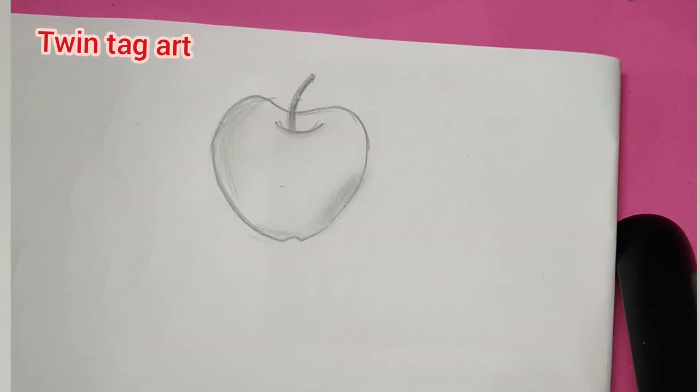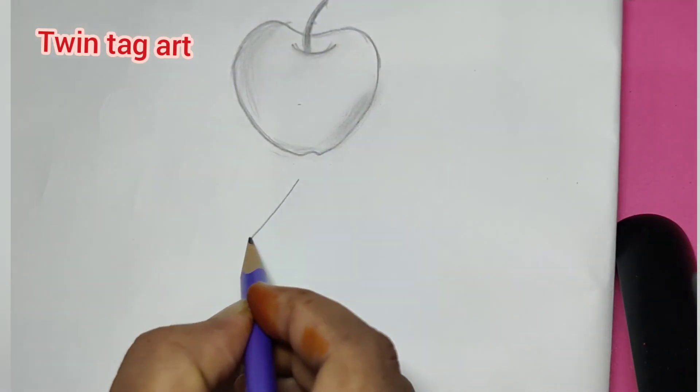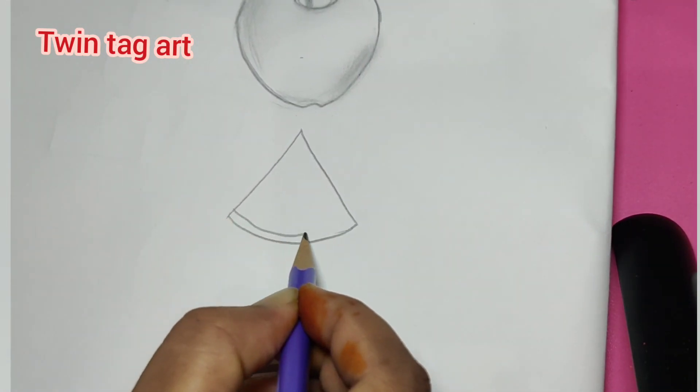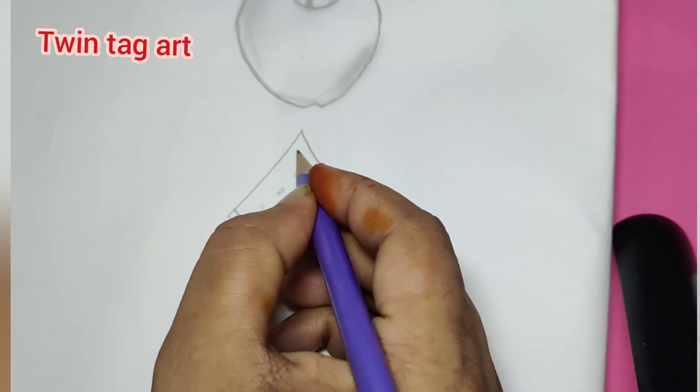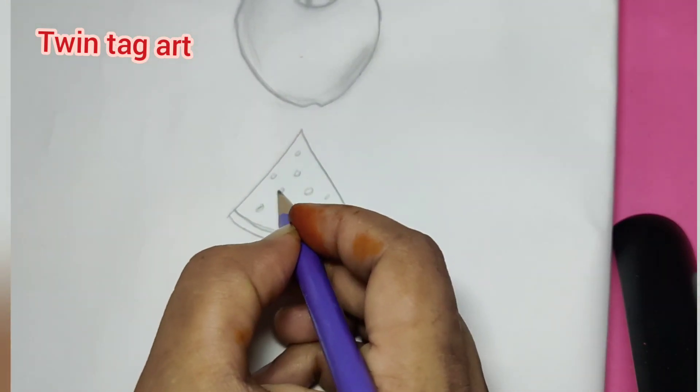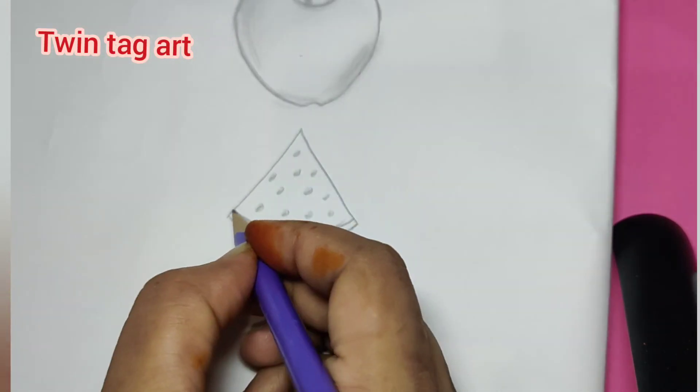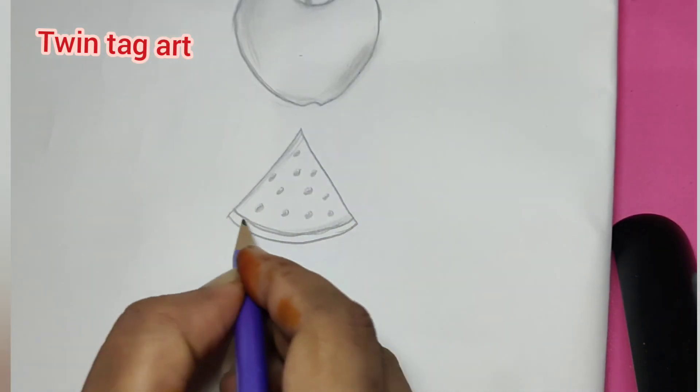In the same way, you can draw any object. Let's draw watermelon pieces using a triangular shape. We have to draw a triangle, and we can draw different sketches using shapes in our class today.